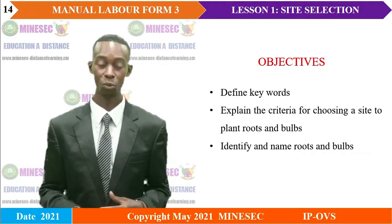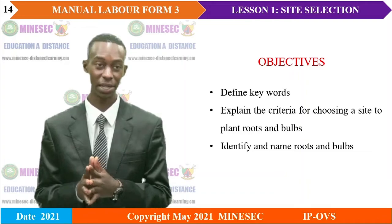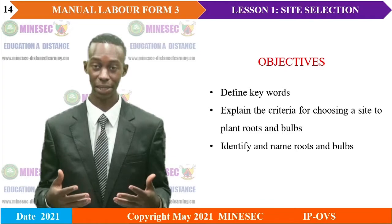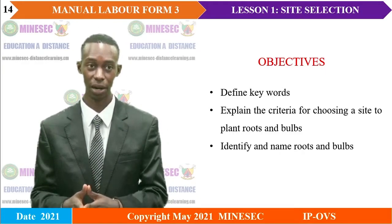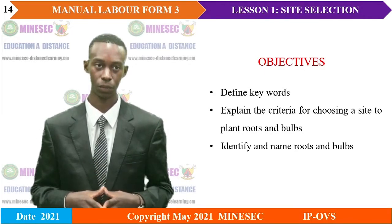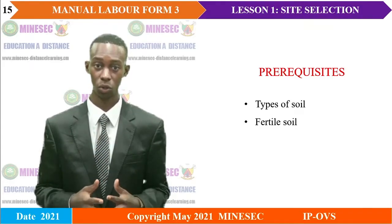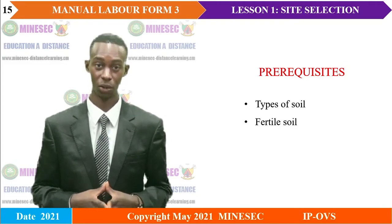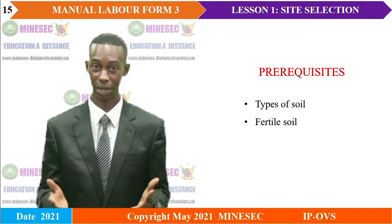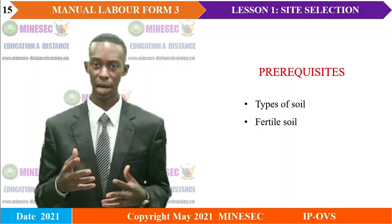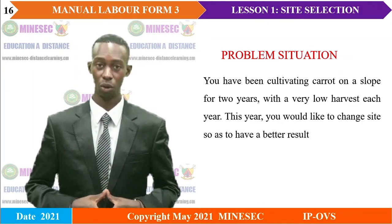The objectives of this lesson are: by the end, learners should be able to define keywords, explain the criteria for choosing a site to plant roots and bulbs, and identify and name roots and bulbs. Prerequisites include knowledge of types of soil and understanding what fertile soil is.